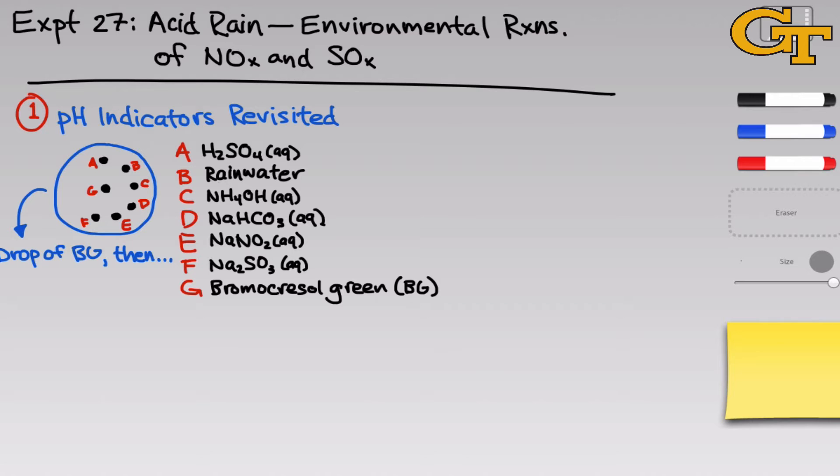And I want you to think about two questions as you're going through this part of the experiment. First of all, what's the acidity of each of these compounds, A through G, relative to B, relative to just plain rainwater? We're going to be evaluating the acidity of rainwater upon exposure to NOx and SOx, and to do that, we need to know what colors represent acidic and basic solutions.